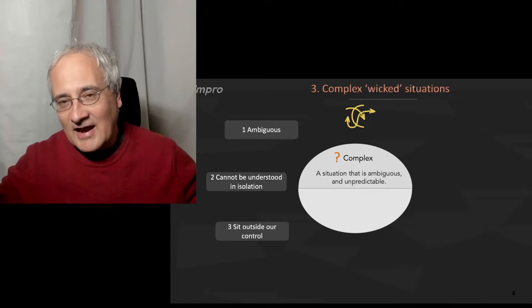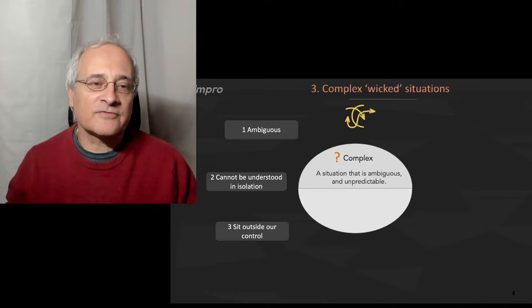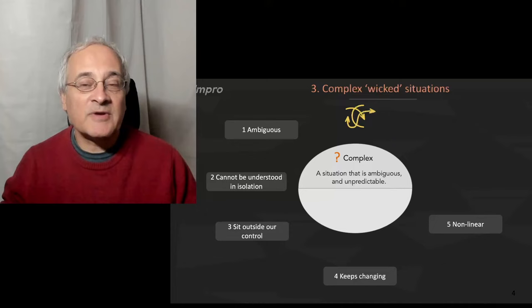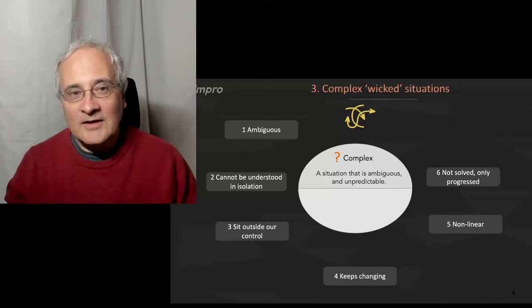The idea of a complex situation is one where we don't really understand what's going on. We may not be able to understand how it links with causes. It may sit outside of our area of control. When we look at it or we look at it again, it keeps changing. When we try to understand how it works, it may appear to be non-linear. It doesn't follow a sequential pattern.